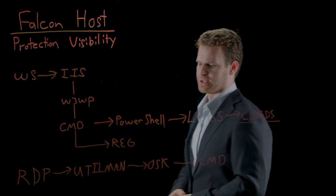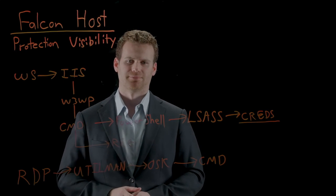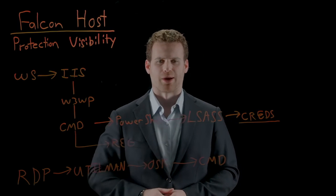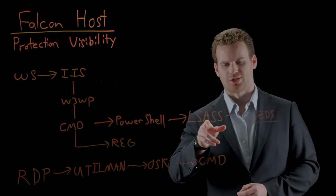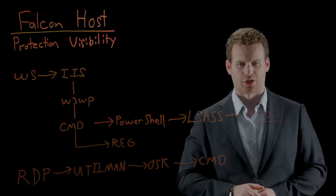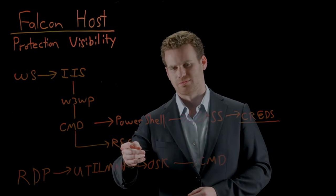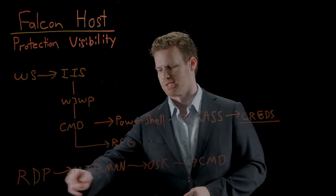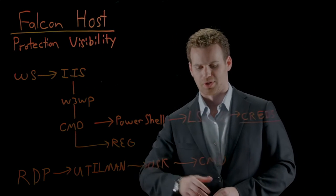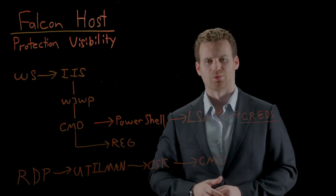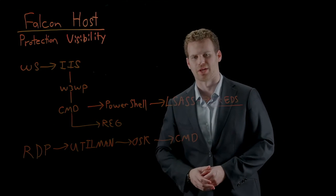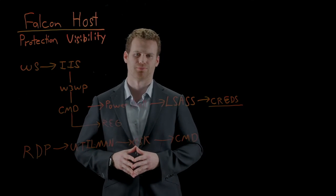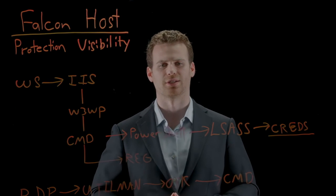So what did this intrusion look like to Falcon Host? Falcon Host is able to track every piece of behavior associated with this attack. After the web shell is injected into the web server, the worker process spawns a command prompt. From there, the command prompt executes PowerShell, downloads a script, loads it into memory, and injects into the LSASS process, which allows the attacker to dump credentials from the system. Separately, the command prompt modifies the registry in such a manner that allows the attacker to bypass Windows login security. Our attacker creates a remote desktop connection to the victim system, uses the utility manager to bring up the on-screen keyboard, and from there the attacker is able to get a command prompt with local system privileges. Notice how this entire sequence of events does not require the attacker to write any malicious code to the system, which means it would be impossible to detect with a traditional malware-based approach. However, Falcon Host can still detect this intrusion several different ways using a variety of indicators of attack.